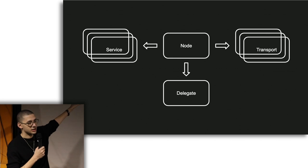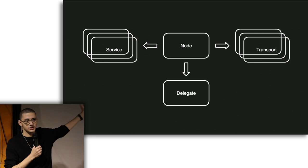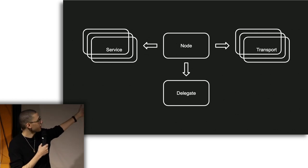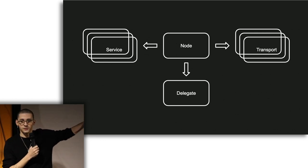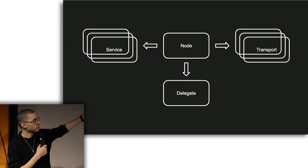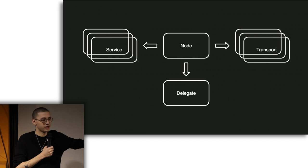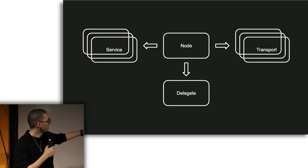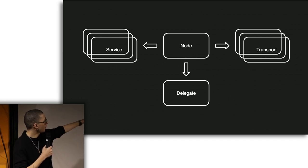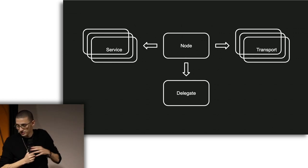Services are things like WhatsApp would have its own WhatsApp service, or what we've built now is an Ethereum service so you can send Ethereum transactions over this. Transports are things like Bluetooth, Wi-Fi Direct, or ham radios. And then there's a delegate where messages are forwarded if they were not routed successfully through the services.